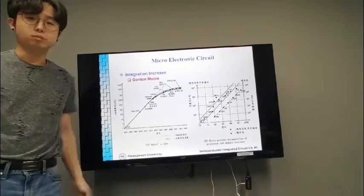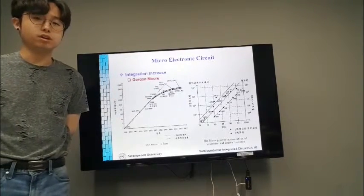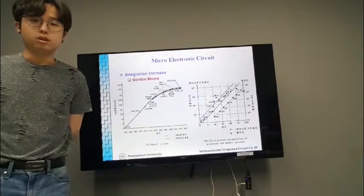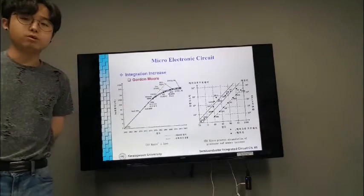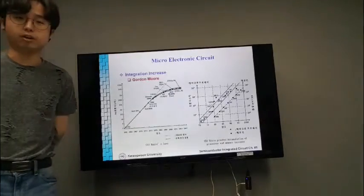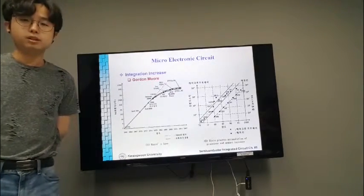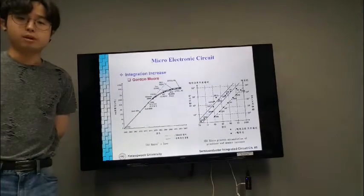Moore's Law is the observation that the number of transistors in a dense integrated circuit doubles about every two years. The observation is named after Gordon Moore, the co-founder of Fairchild Semiconductor and CEO of Intel. As you can see, as year passes, microprocessor accumulation of processor and memory increase.